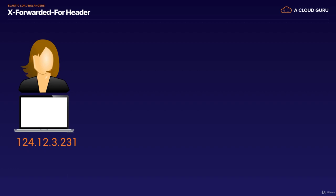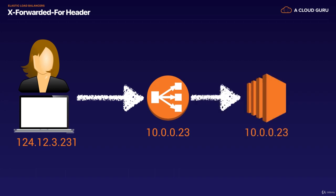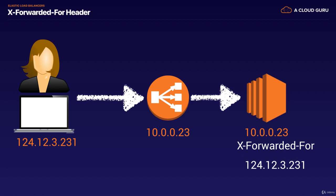Moving on to X-Forwarded-For headers. If a user is browsing your website from a public IP address, say 124.12.3.231, and they hit your elastic load balancer, the load balancer has an internal IP address of 10.0.0.23. This internal address is what gets passed to your EC2 instance, which ends up logging the load balancer's IP as the user's IP address. That can be annoying because you might want to know your user's actual IP — for example, to identify users coming from France. You can still get their public IP by looking for the X-Forwarded-For header, which will contain their public IP address.